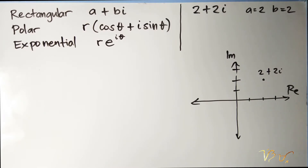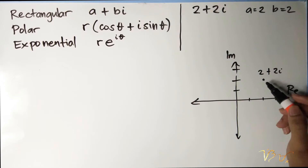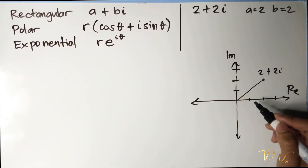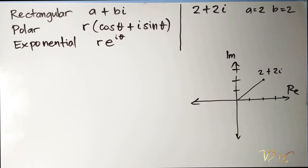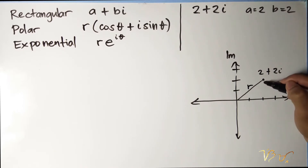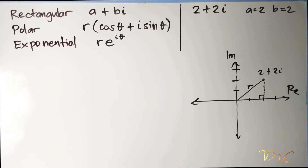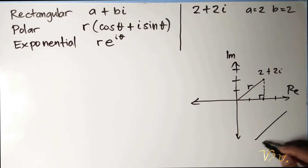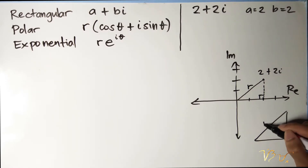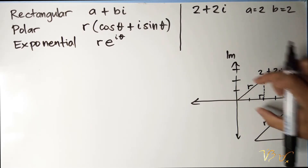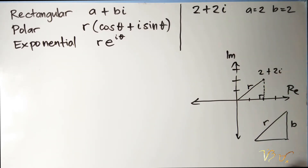To transform a rectangular form complex number into its corresponding polar form, we will use a triangle. We know that r is the distance from the origin of the Argand diagram to the complex number — this is also called r modulus. We can form a right triangle. This would be r, this would be b, the imaginary part, and this is a, the real part of our complex number.